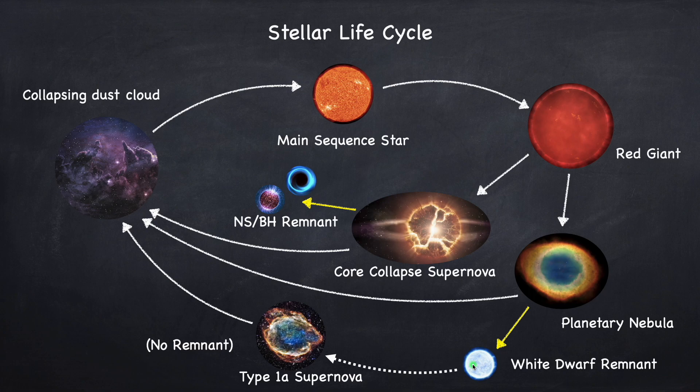Now it is possible for the white dwarf to blow up in a type 1a supernova. And finally, the matter expelled in the supernova and the planetary nebula may eventually find its way back into a collapsing dust cloud and the whole cycle starts again. So now let's take a look at white dwarfs in greater detail.